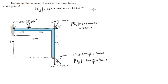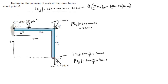The moment that Force 1 creates about point A — assuming counterclockwise is positive — equals 216.5 newtons times the lever arm length of 2 meters. It pushes clockwise, so it's negative: negative 433 newton-meters, or 433 newton-meters going clockwise.